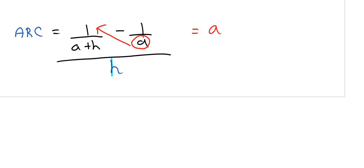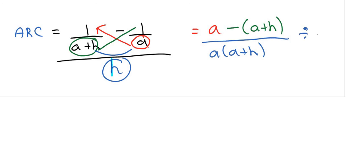So a times 1 is a, and then if I have a plus h, if I times that by negative 1 this can be negative bracket a plus h. Then I'm just going to multiply the two denominators. If I do that I get a times a plus h, all divided by h.